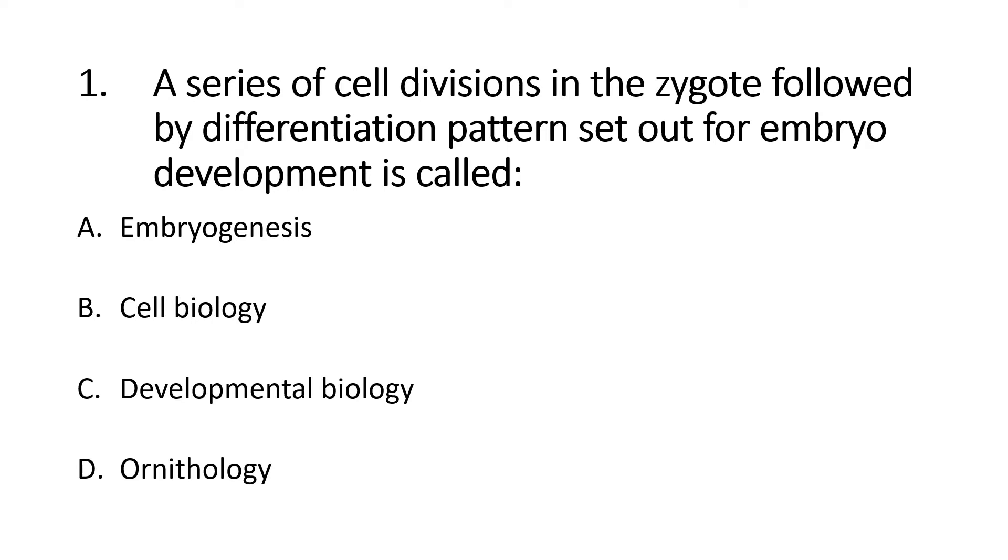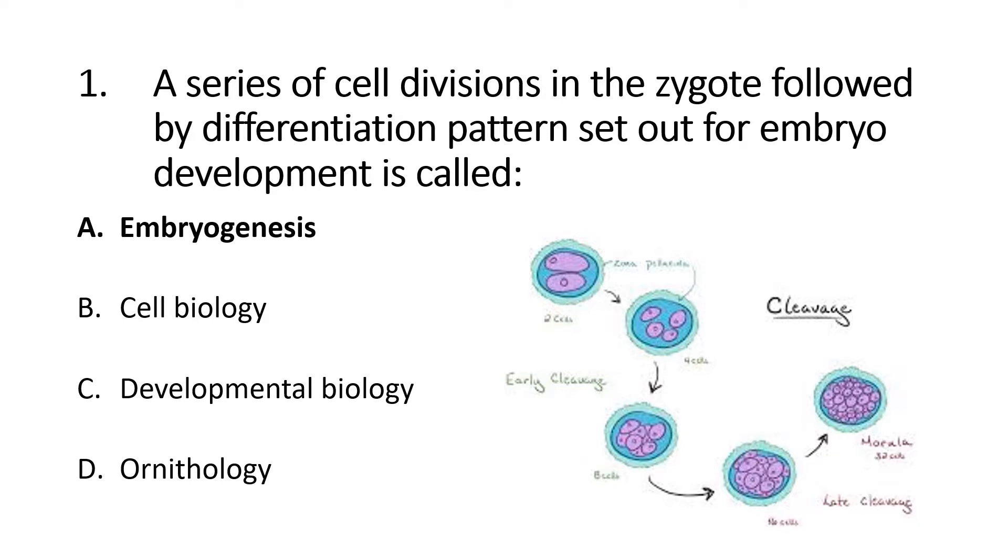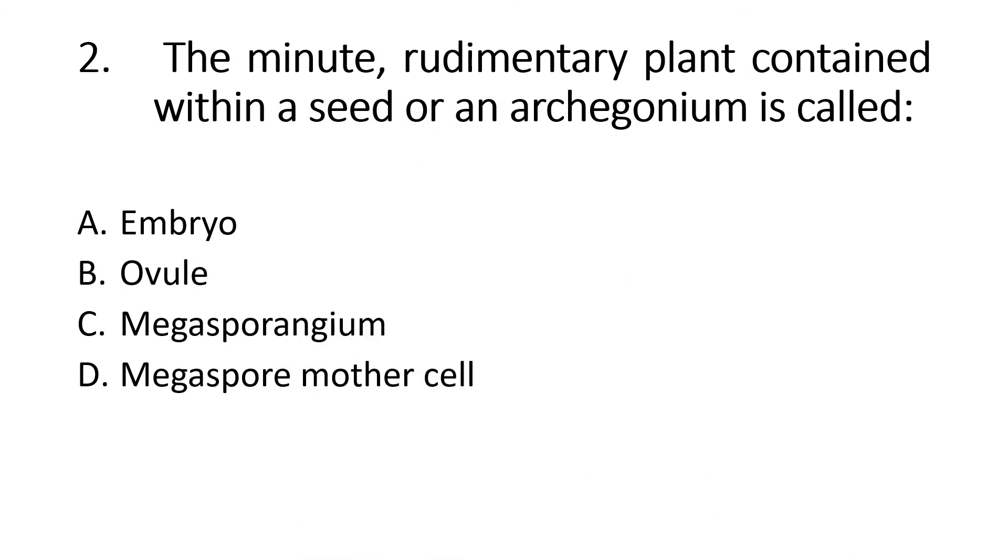First MCQ is a series of cell divisions in the zygote followed by differentiation pattern set out for embryo development is called. Given options are, the right option is alpha, embryogenesis. Embryogenesis is called the embryo formation. The embryo is the minute rudimentary plant contained within a seed or an archegonium. This is a botanical definition of an embryo. So the right answer would be alpha.